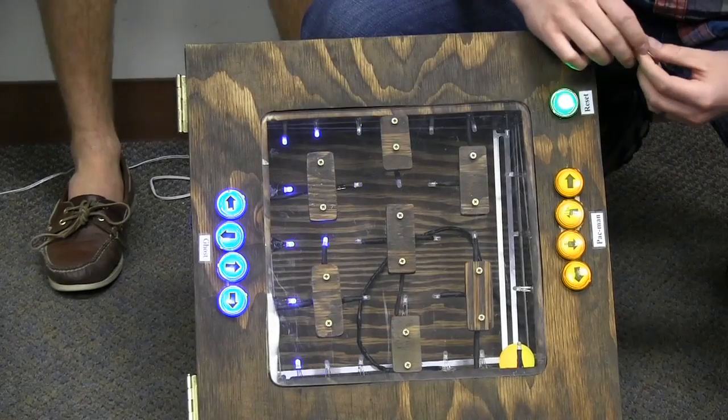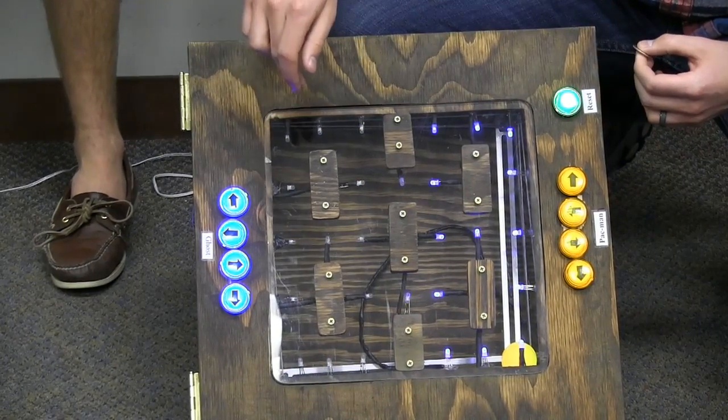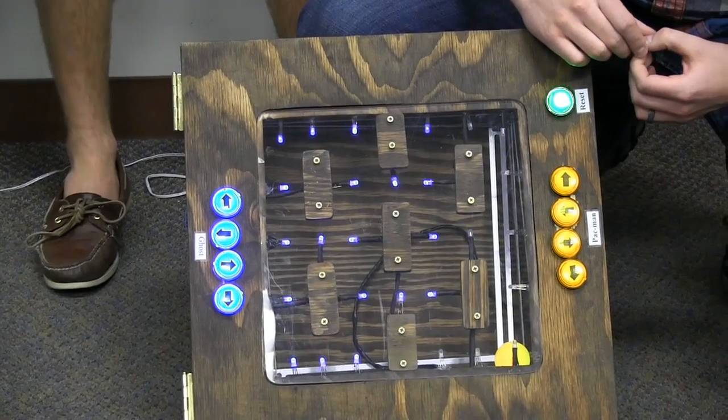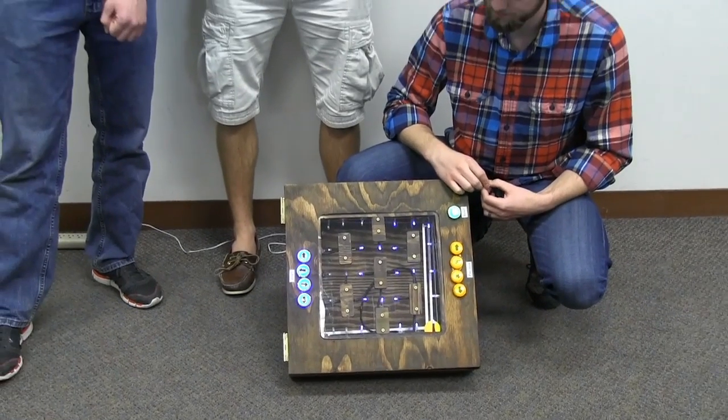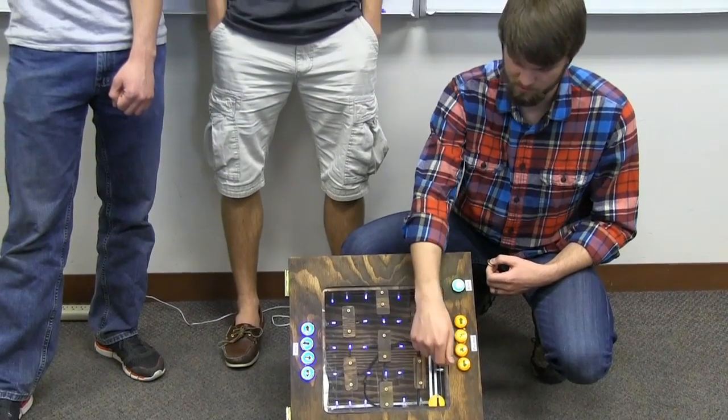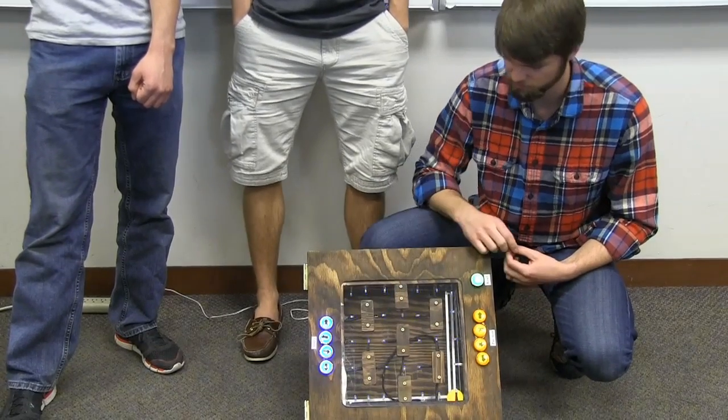The ghost is represented by the blue LEDs here, and it can move into any position on the board. There's a map laid out with some wood blocks here, and it won't allow the Pac-Man or the ghost to go through a barrier.